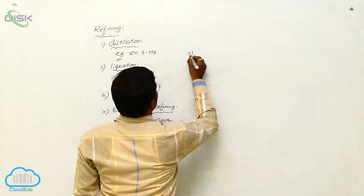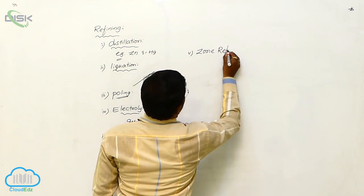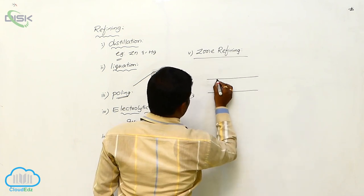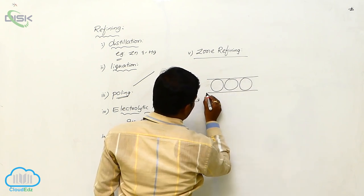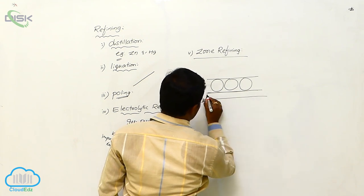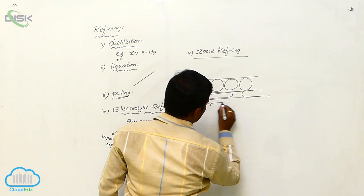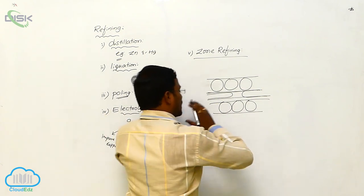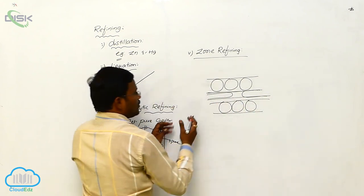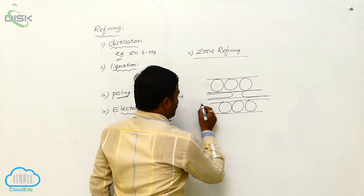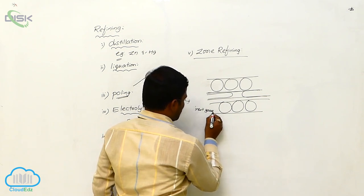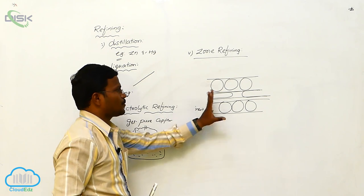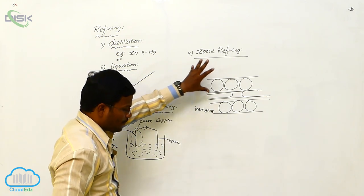The next method is zone refining. In this process, the metals are introduced into high-temperature areas. The metals move from one side of the equipment to the other side using a belt. During this, by using inert gases, the impurities present in the metals can evaporate or escape. This type of purification is called zone refining.